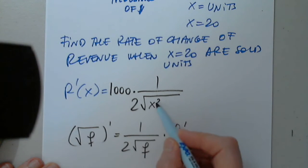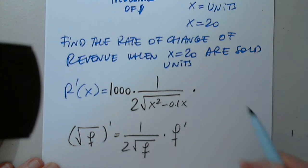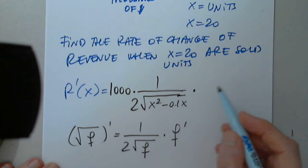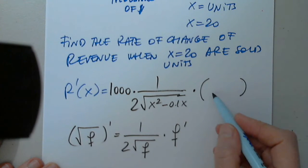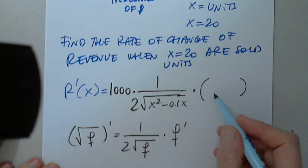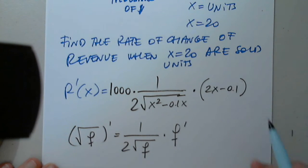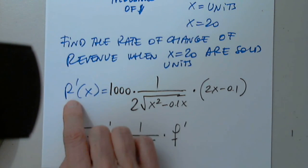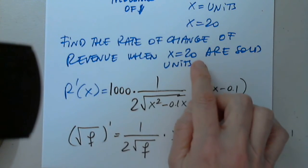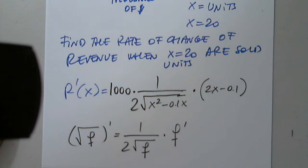So that could be x squared minus 0.1x. The derivative gives us 2x minus 0.1 — excellent. At this point we're asked to find the rate of change. We already found it, but now they want us to find it when x is 20 units. What do you think we need to do? We would just plug in 20 — absolutely.